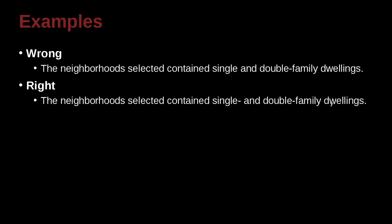The neighborhood selected contains single and double family dwellings, and here we have this special case of double family. So this does seem to be good for a hyphen, because we're saying dwellings are this kind, double family. There's also another kind of dwelling called the single family. However, we could put family here.